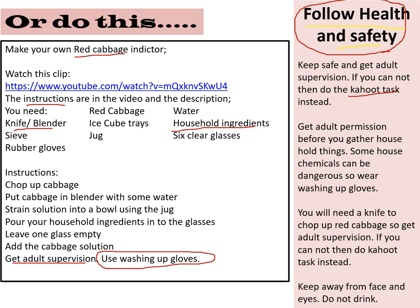Stay safe — keep away from face and eyes and do not drink anything from the practical. Get adult permission before gathering household ingredients as some can be dangerous. You'll need a knife to chop the red cabbage, so get an adult to help. If you can't do the practical safely, do the quiz task instead. Upload your results to Google Classrooms — I'd love to see what's acid, alkaline, and neutral. Enjoy, bye!